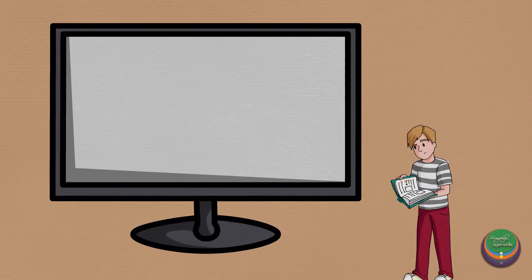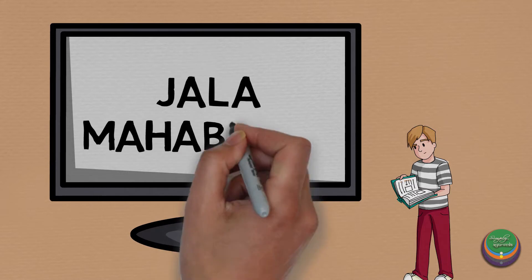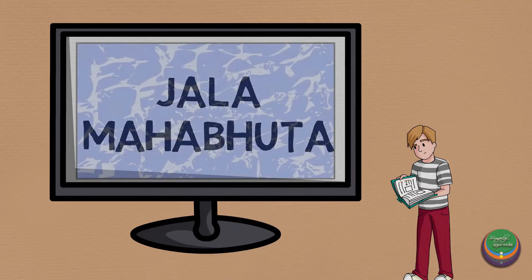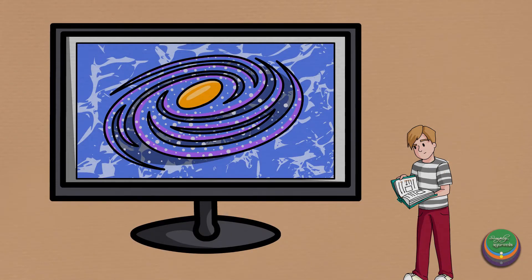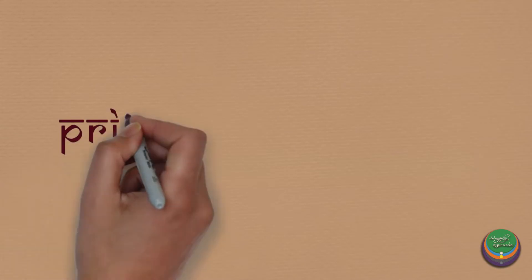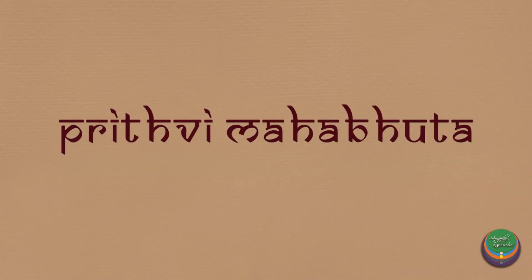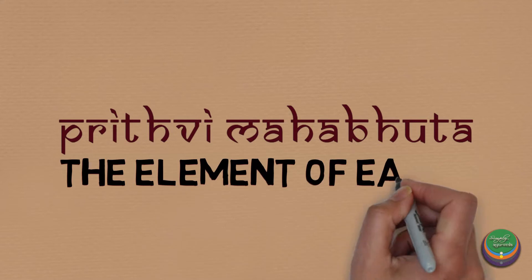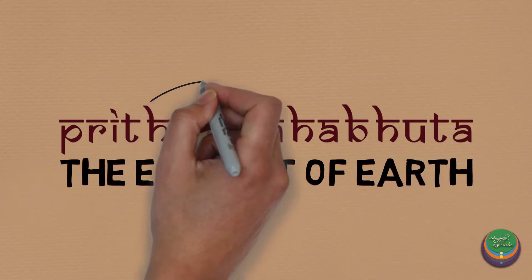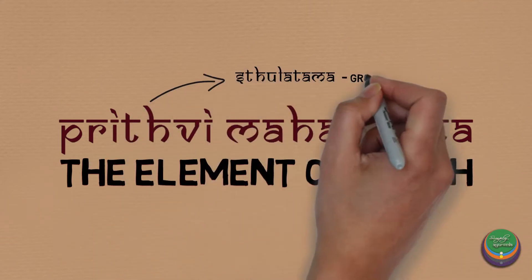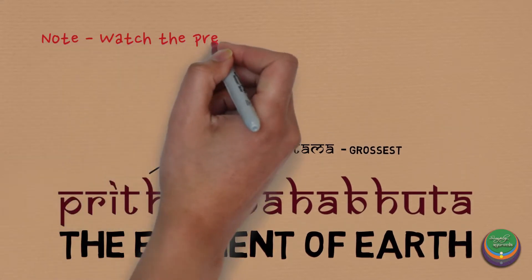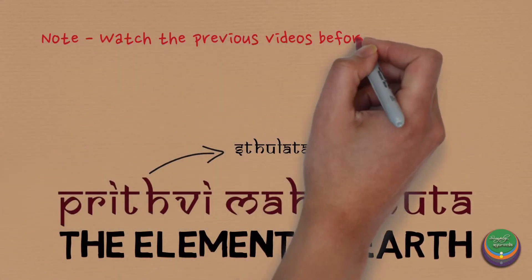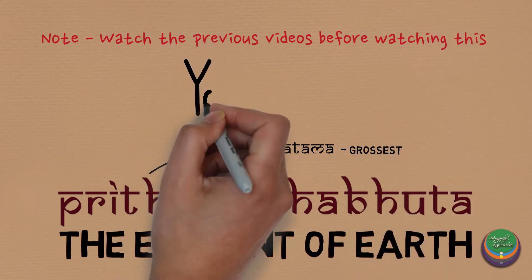Namaste. We learned about the element of water or Jala Mahabhuta in our previous video, and understood its various aspects, attributes, and the role it plays in this universe. In this video, we will try to understand the Stoola Tama Mahabhuta or the grossest of the five elements — Prithvi or the element of earth — and analyze its various attributes. This video is a sequel to the previous four videos in this series, so it is recommended to watch those first.